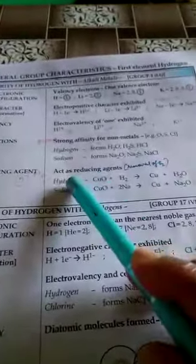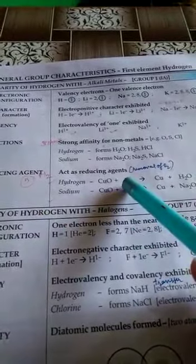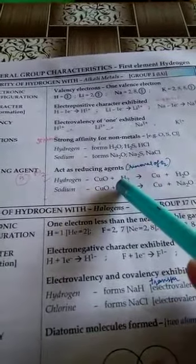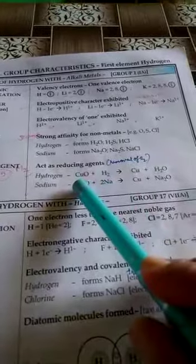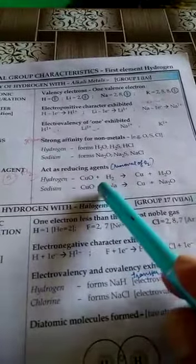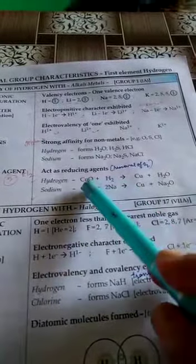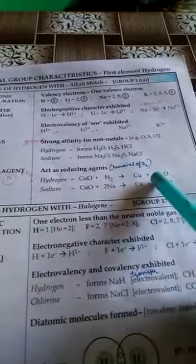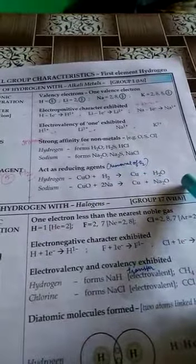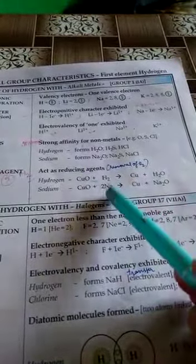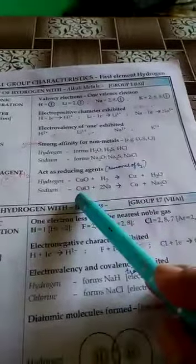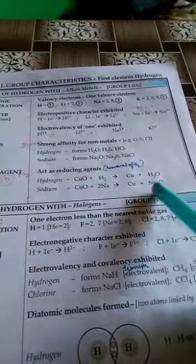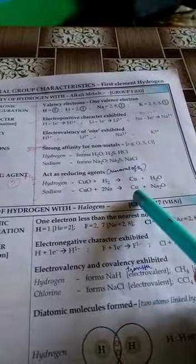All these are reducing agents. It means they help in removing oxygen from the compound. Look at the example. Copper oxide when reacts with hydrogen, it removes oxygen from it and forms copper and water. Similarly, when sodium reacts with copper oxide, sodium removes oxygen from copper oxide and forms sodium oxide, and copper is separated.